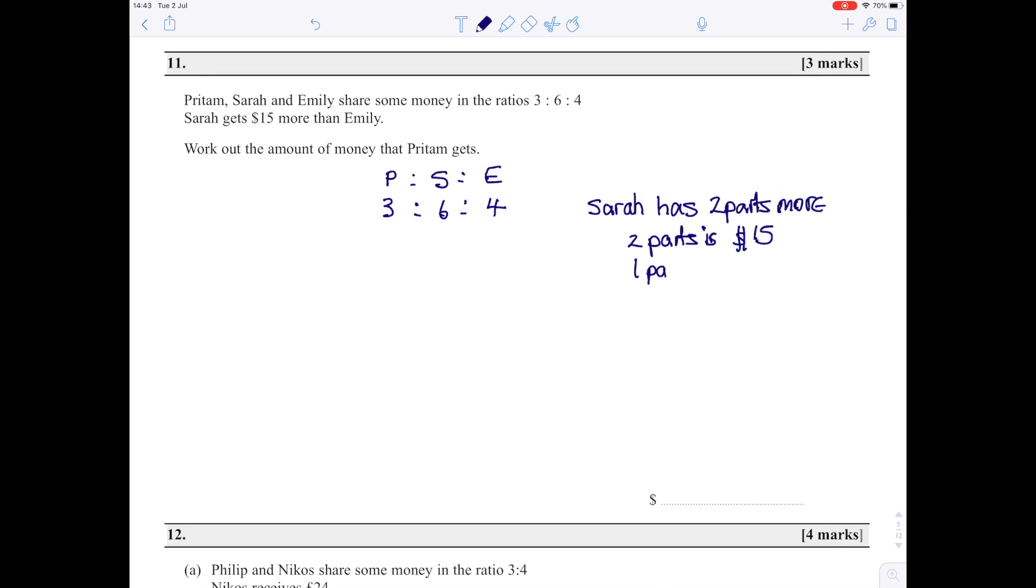Two parts is $15, so one part is 15 divided by 2, which is $7.50. To find the amount of money that Pritam gets, he gets 3 parts, so Pritam gets 3 times $7.50, which is $22.50.